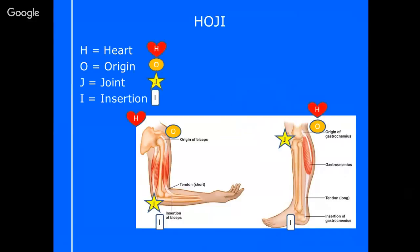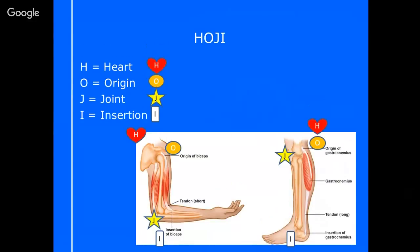Origin is the closest point to the heart; insertion is the furthest part from the heart. The really important thing to remember about the difference is that the origin and insertion must be separated by a joint. If they don't cross a joint, something's gone wrong — that muscle won't be able to cause any movement. The muscle shortens like an accordion, pulling the origin and insertion closer together, which moves the joint. Origin is on the heart side of the joint.